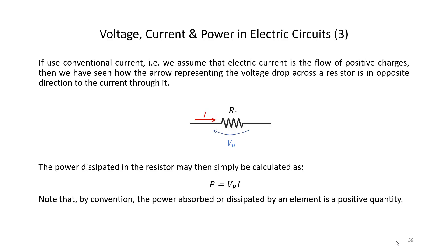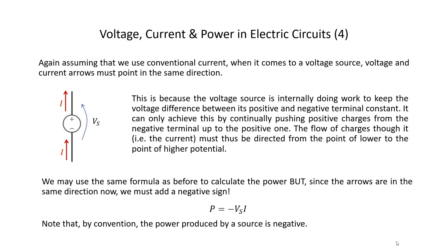We assume that electric current is the flow of positive charges, and so we represent the voltage drop across a resistor and the current through it with arrows pointing in opposite directions. The power absorbed or dissipated in the resistor is calculated as the voltage across the resistor Vr times the current through it I. By convention, the power absorbed or dissipated by a passive element is defined as a positive quantity. For a voltage source, the voltage and current arrows point in the same direction, because the source internally does work to maintain the voltage difference between its terminals by continually pushing positive charges from the negative terminal up to the positive one.